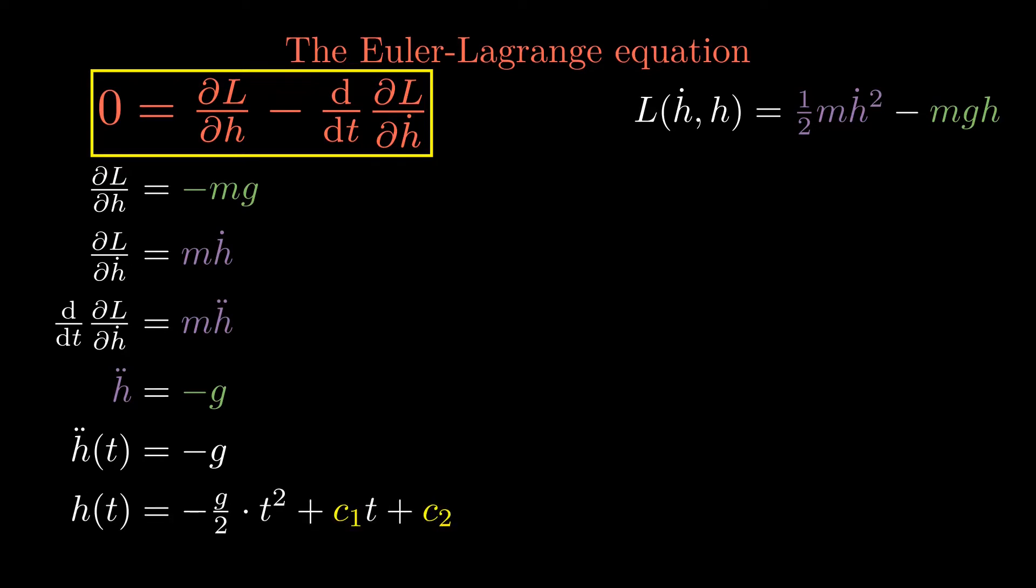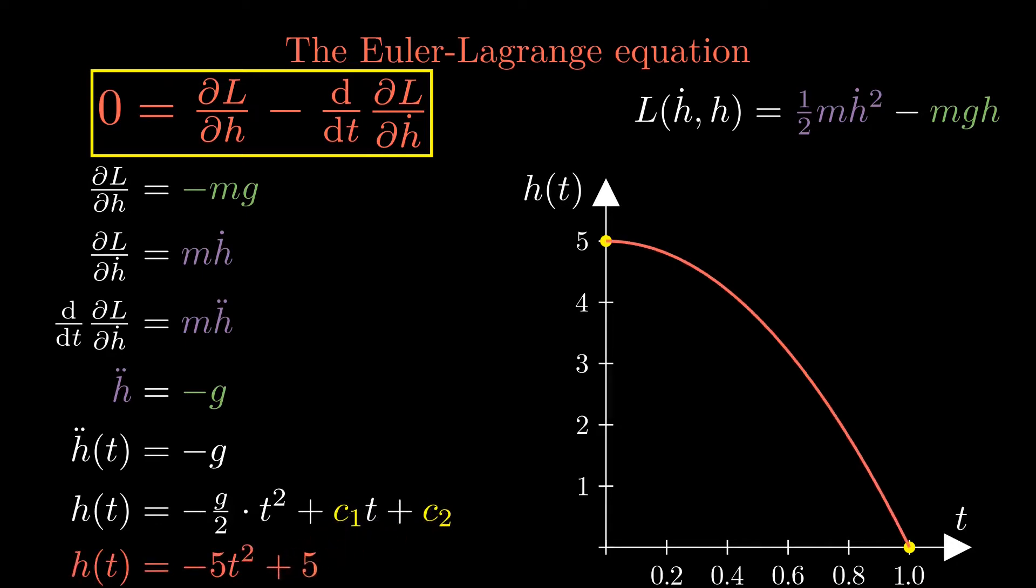The general solution is a quadratic function with two constants. These two constants are fixed by the boundary conditions that the motion starts at 5 meters and ends at the ground after one second. This yields the unique function that fulfills the principle of least action for the given Lagrangian.